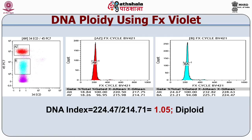In this second example, blasts are again gated using differential CD45 expression, discriminated from the bright CD45 red lymphocytes. The mean fluorescent intensity of the lymphocytes and the blast cells are compared, and the DNA index is calculated by dividing the MFI of the blasts by the MFI of the mature lymphocytes, giving a DNA index of 1.05. This tumor is therefore classified as diploid.